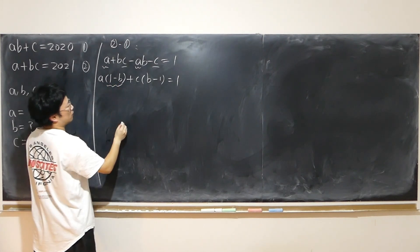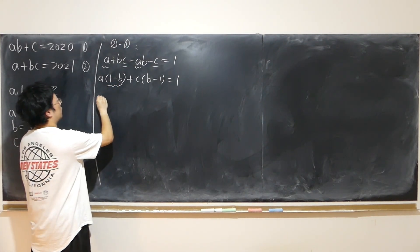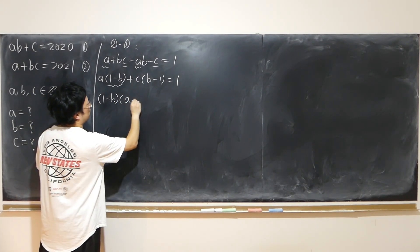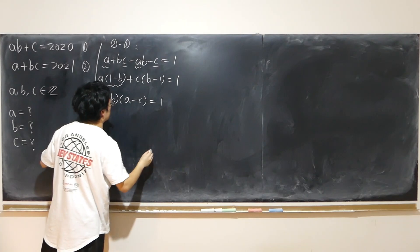Common factor 1 minus b, here's b minus 1. So 1 minus b times a. So change the sign. Minus c equals 1.